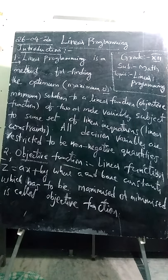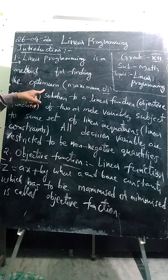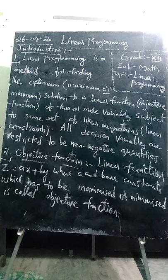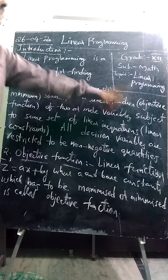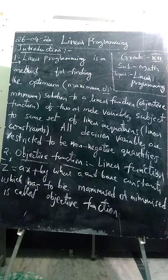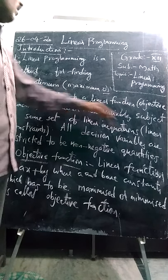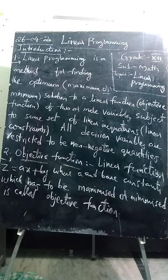So, what is linear programming? Linear programming is a method for finding the optimum — meaning the maximum value or minimum value, such as maximum profit, minimum cost, maximum output, or minimum input — solution to a linear function. This linear function is also called the objective function, and it involves two or more variables. Already in Grade 10 you learned about linear equations, but here we deal with linear inequations.